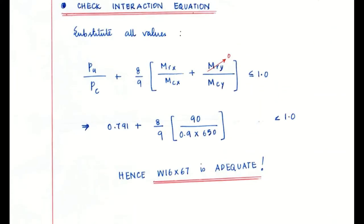Since there is no moment in the Y-axis, MRY = 0. Substituting all values — PC, PR, MRX, and MCX — into the interaction equation gives a ratio of approximately 0.92, which is less than 1. Therefore, the beam column section is adequate to carry both compression and bending.